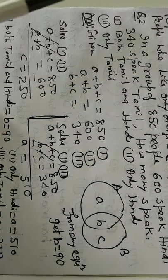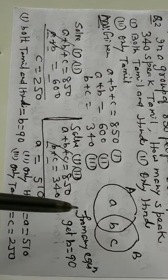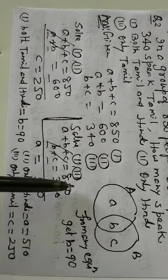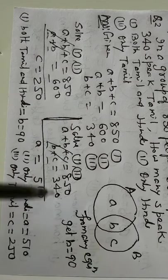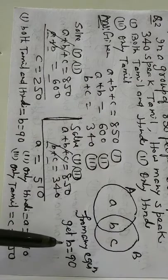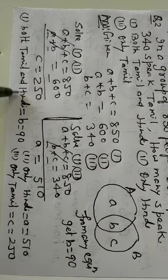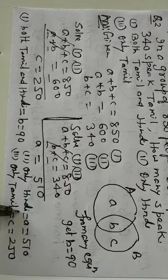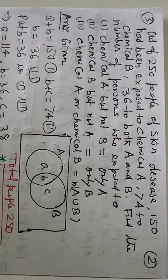We get C is equal to 250, A is equal to 510. So both Tamil and Hindi, this is the B and the value of B is, yes, if C and A are ready, you can find B from any of the equation, B is 90. So both Tamil and Hindi, 90, only Hindi, A is only Hindi, 510. A is only Hindi, 510 and only Tamil C, C is 250.